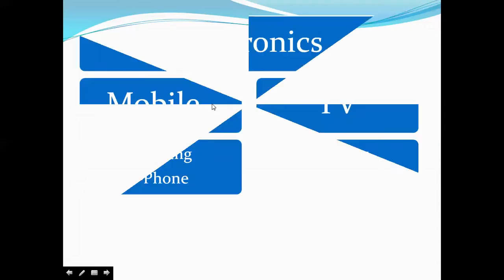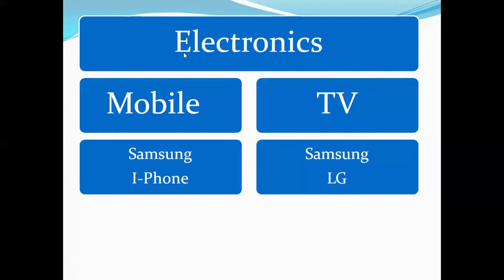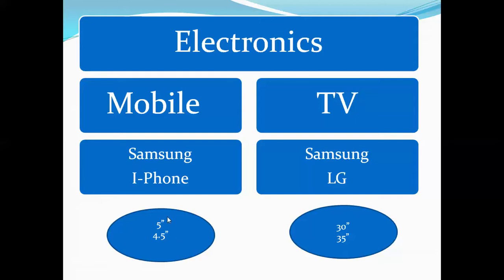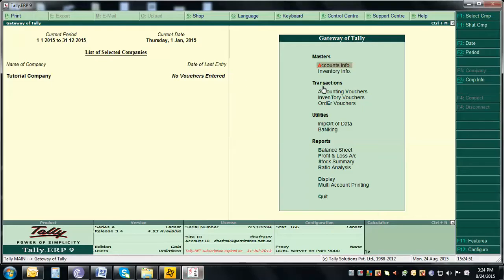Suppose we're going to start an electronics business. In electronics we have one group, and in that group we will have subgroups like Mobile and TV. Under Mobile and TV we'll have further subgroups — Samsung and iPhone under Mobile, and Samsung and LG under TV. We'll also have categories like 5-inch display, 4.5-inch display for mobiles, and 30-inch and 35-inch for TVs.